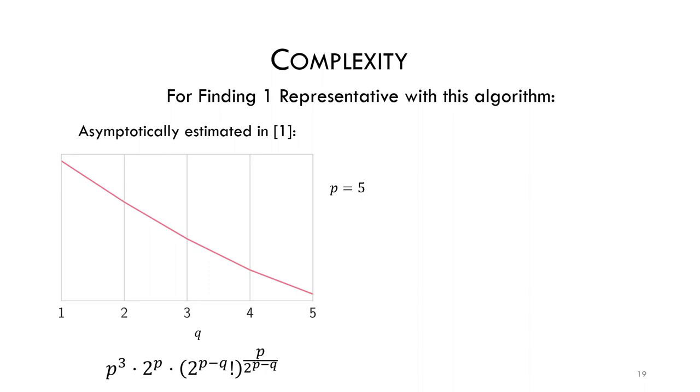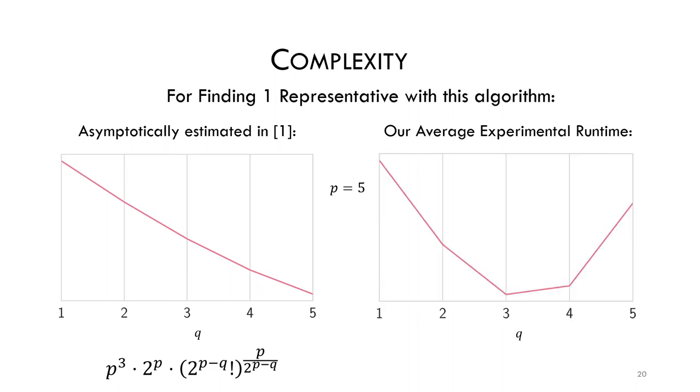As a result, they advised to not use the algorithm for q smaller than p minus 2. However, when we implemented our algorithm and measured the experimental runtimes, we saw a very different trend. We saw that the complexity initially decreases as q decreases and only increases when q becomes very small.